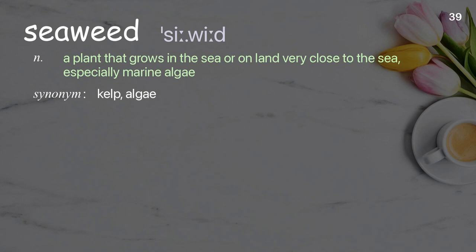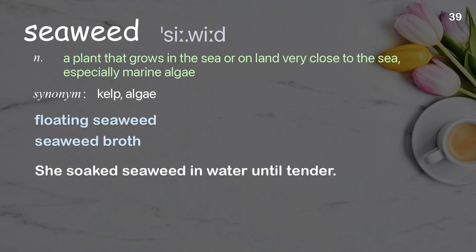Seaweed. A plant that grows in the sea or on land very close to the sea, especially marine algae. Examples: Floating seaweed, seaweed broth. She soaked seaweed in water until tender.